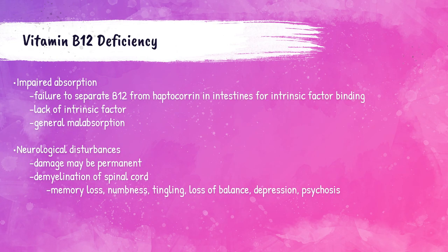If a patient doesn't eat enough vitamin B12, that can cause a deficiency. But impaired absorption also causes a deficiency even if adequate amounts are consumed. There can be general malabsorption, or the patient may lack intrinsic factor. If there is no intrinsic factor, vitamin B12 cannot be absorbed. Also, if the B12 isn't separated from the haptocorin complex, it won't be able to bind intrinsic factor even if it's present. All of these cause impaired absorption and lead to a deficiency.